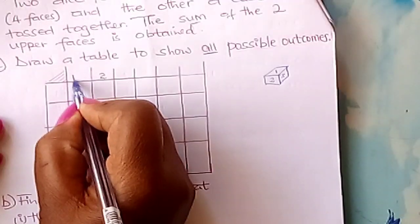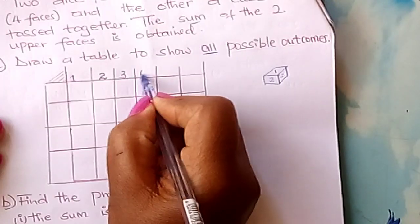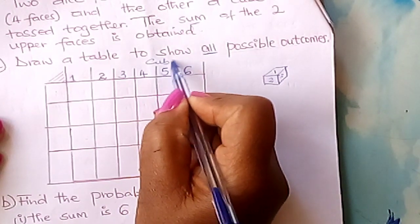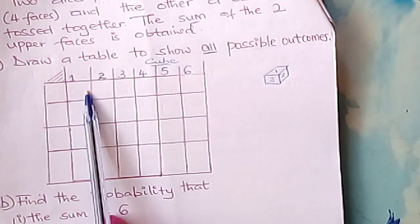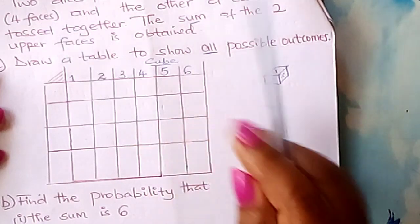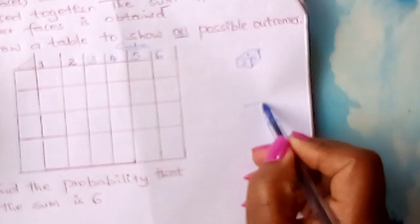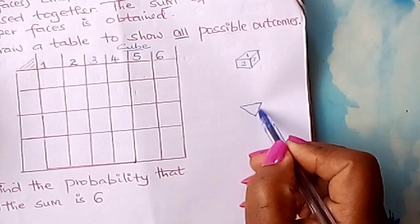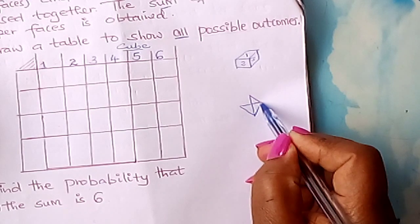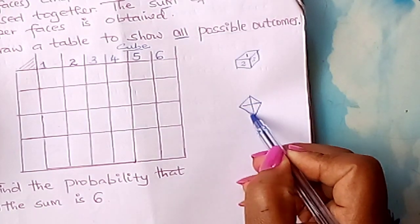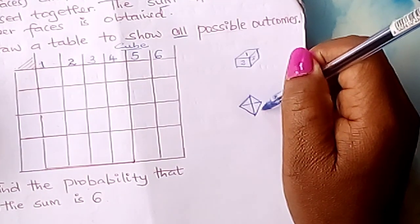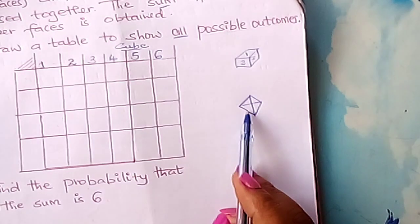Now we go to our tetrahedron. A tetrahedron has four faces — it looks roughly like this, made up of four equal triangles: one on the bottom, one on this side, another on this side, and a fourth one behind. So this tetrahedron is made up of four equal triangles and has four faces.